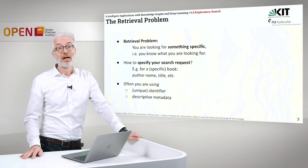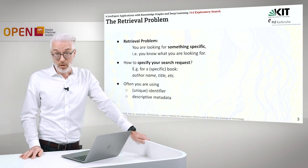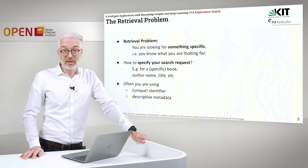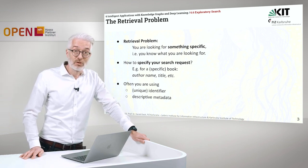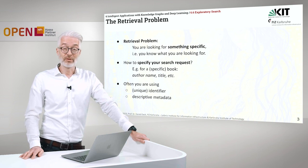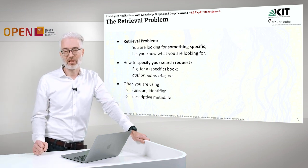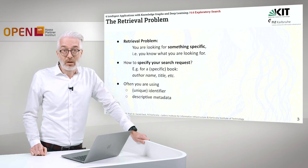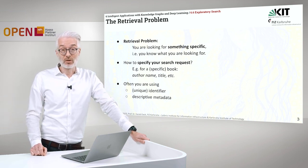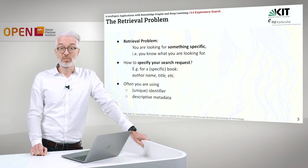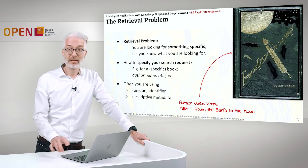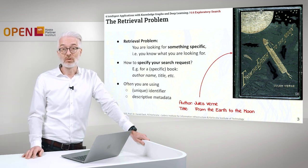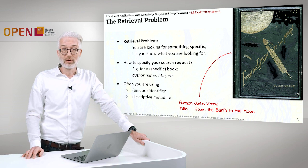Let us sort back to the retrieval problem. The retrieval problem is: you are looking for something specific and of course you know what you are looking for. You have exactly in mind what you are searching for. The problem then is always how do I specify my search request, for example for a specific book like Jules Verne's 'From the Earth to the Moon.'